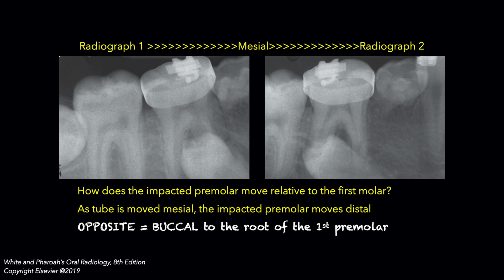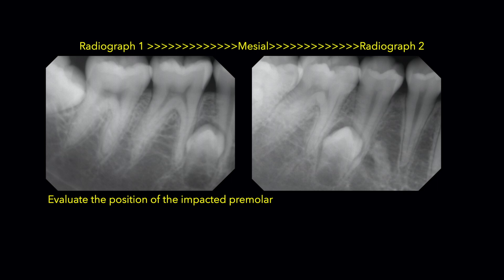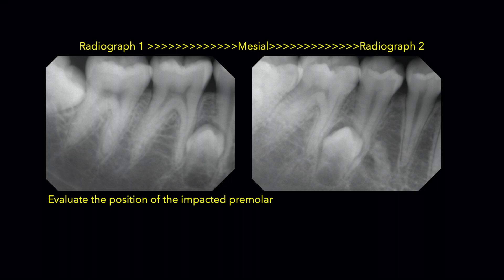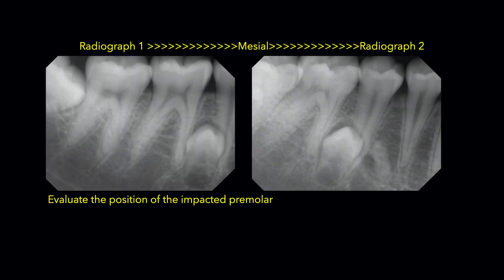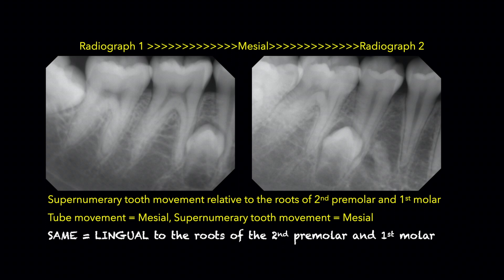Now let's apply this again to another set of radiographs. In this case, we have an impacted supernumerary premolar that is superimposed over the roots of the mandibular second premolar and the mandibular first molar. As the tube is moved mesially, the image of this impacted tooth also appears to move mesially, indicating that it is located lingual relative to the roots of the mandibular second premolar and the mandibular first molar.